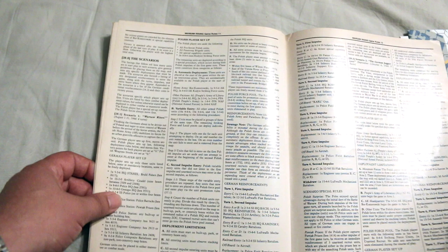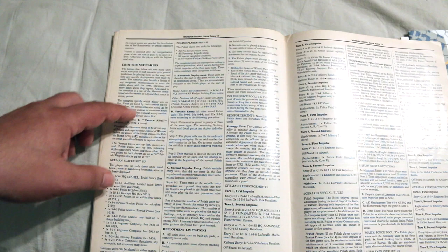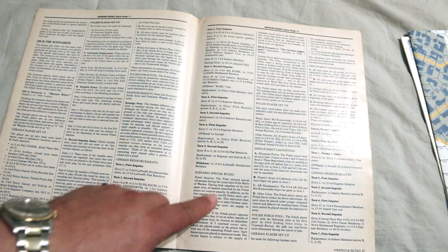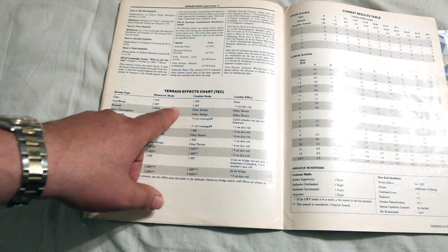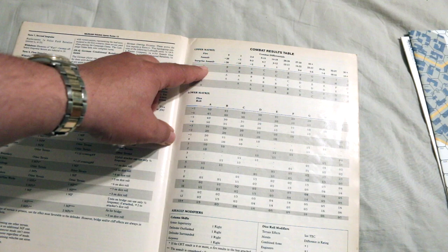Looks like you get victory points to win. And there's some scenarios. That's good. Scenario 1, Warsaw Rises. Is there any other scenarios? Scenario 2, the German Juggernaut. So it looks like two scenarios. Well, that's not bad for a magazine game.